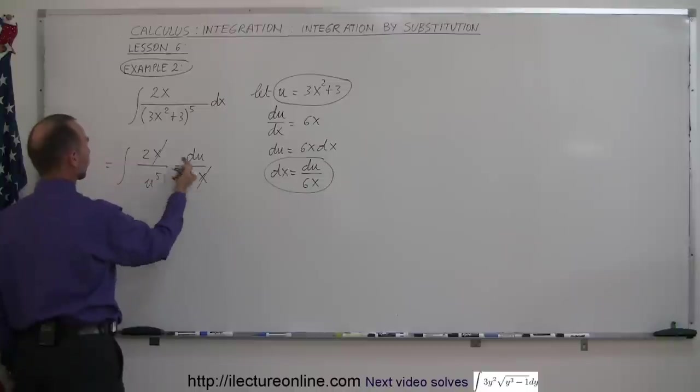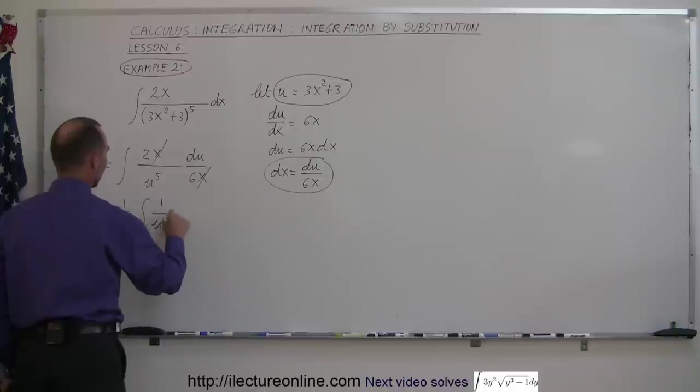And then 2 divided by 6 is 1/3, which can be taken outside the integral sign. So this is equal to 1/3 times the integral of 1 over u to the 5th du.